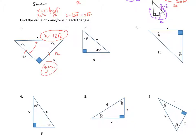For the next one, again a 45-45-90, the given leg is 8. Going across the 45 to a longer side, we multiply, so y equals 8 times the square root of 2.